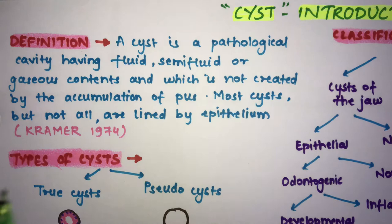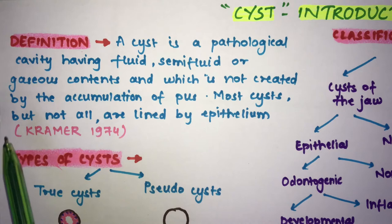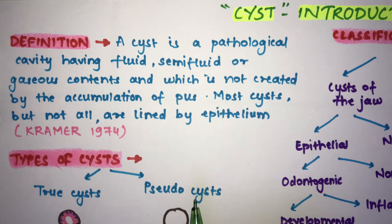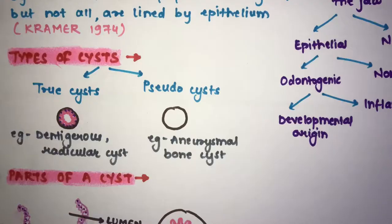Most cysts are lined by epithelium, but not all of them. This definition was given by Karma in 1974. Cysts which are lined by epithelium are known as true cysts, and the ones which are not lined by epithelium are known as pseudocysts. So these become the two types: true cysts and pseudocysts.